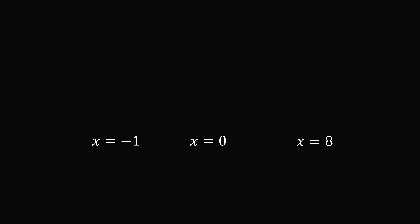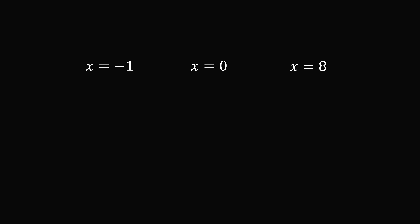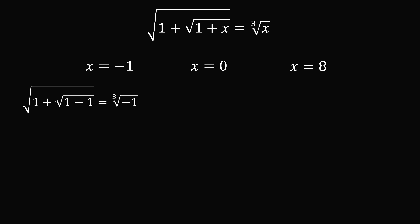Since we squared a radical equation, we must check for extraneous solutions by substituting back into the original equation. For x equals negative 1: 1 plus negative 1 equals 0, so we get the square root of 1 plus 0, which equals 1. But the cube root of negative 1 equals negative 1. So this gives 1 equals negative 1, which is false — an extraneous solution.